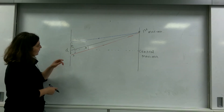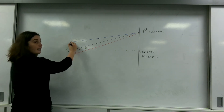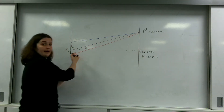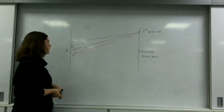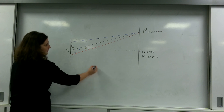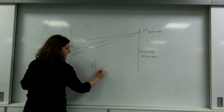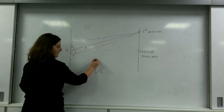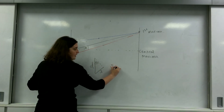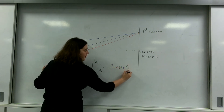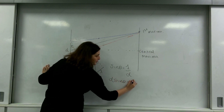Much like with Young's double slit, this triangle is similar to the larger triangle, so the angles are the same. Zooming in on the small triangle: D is the hypotenuse, the extra path length is lambda, and the angle is theta. So sine theta equals lambda over D, which rearranges to D sine theta equals lambda.